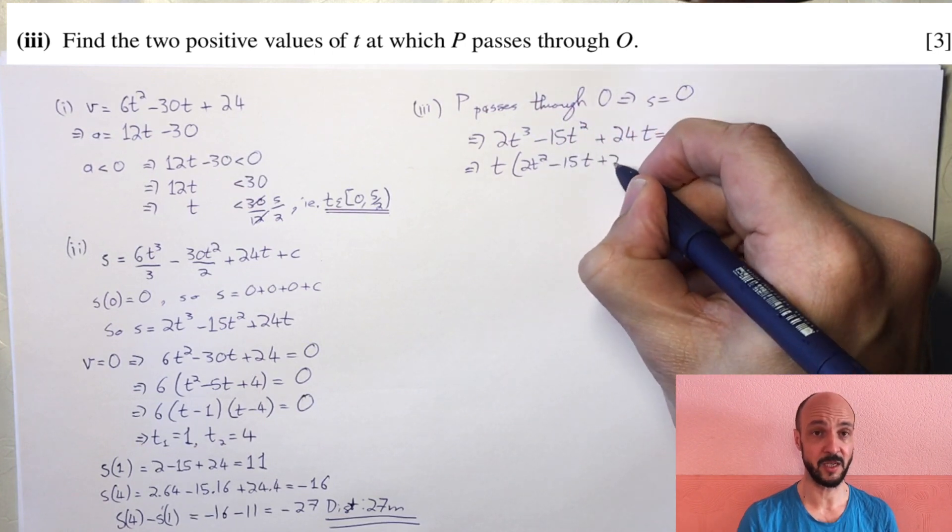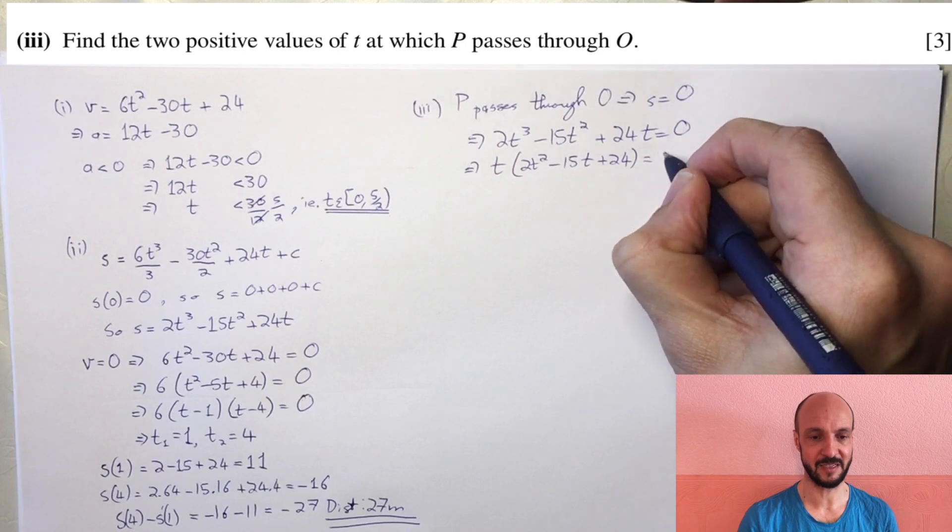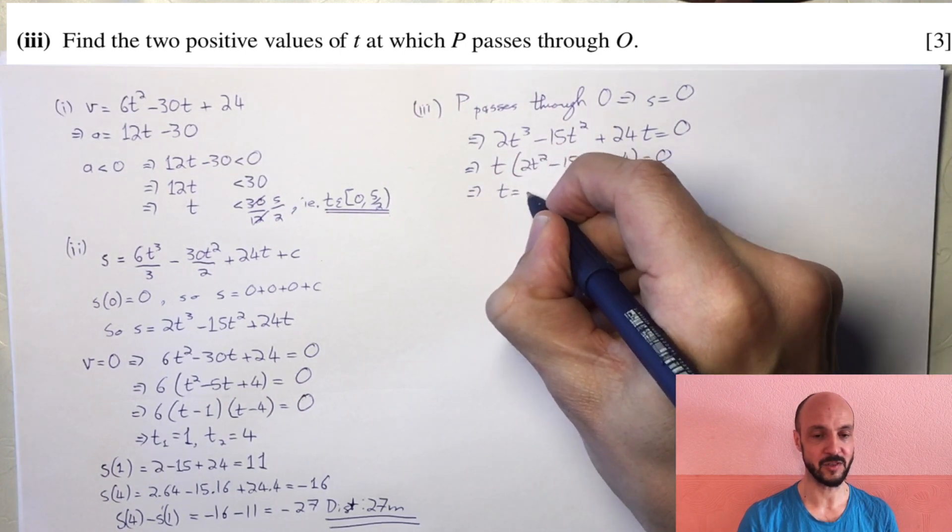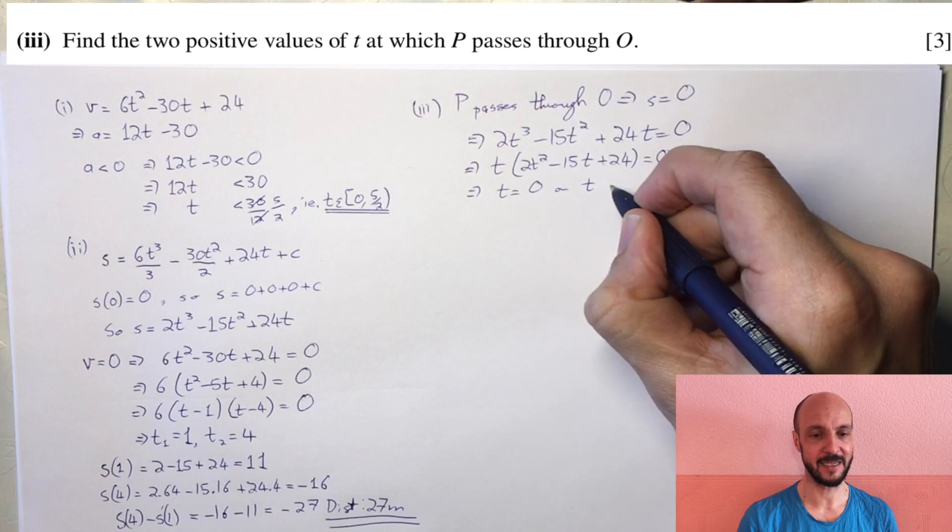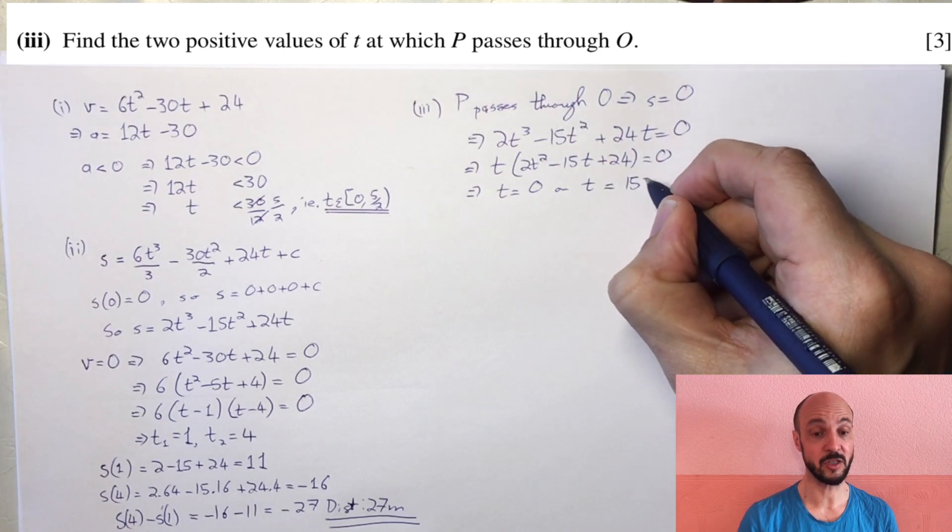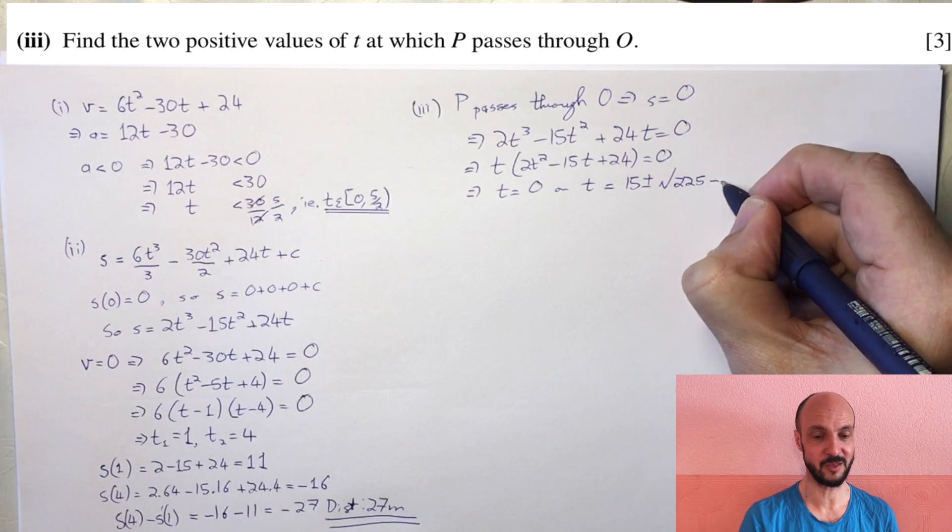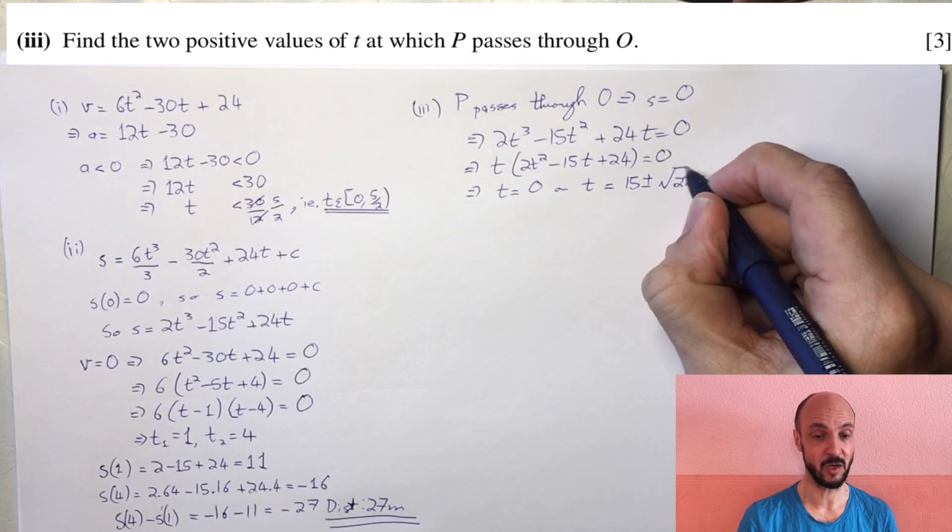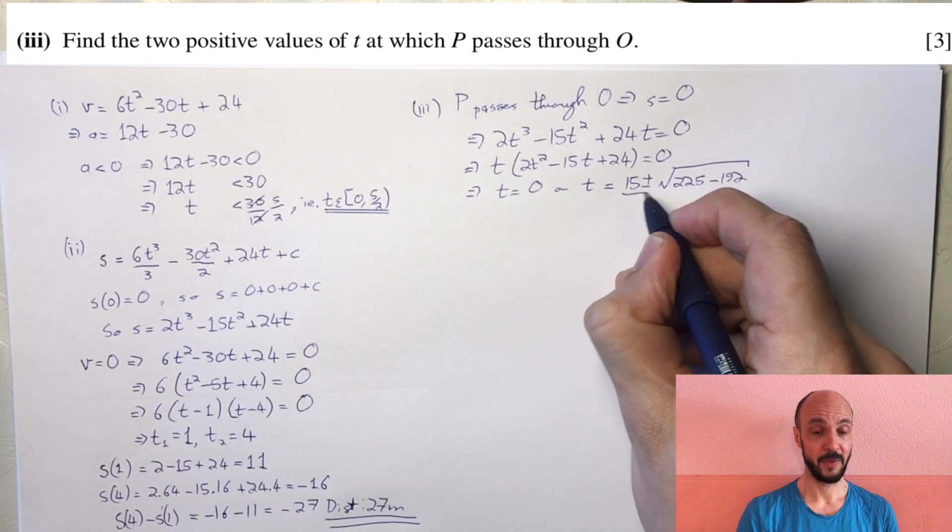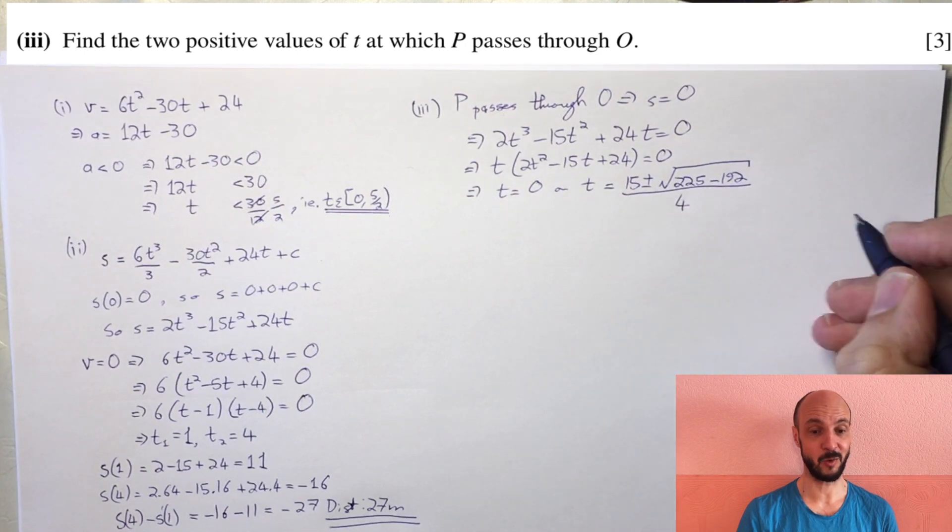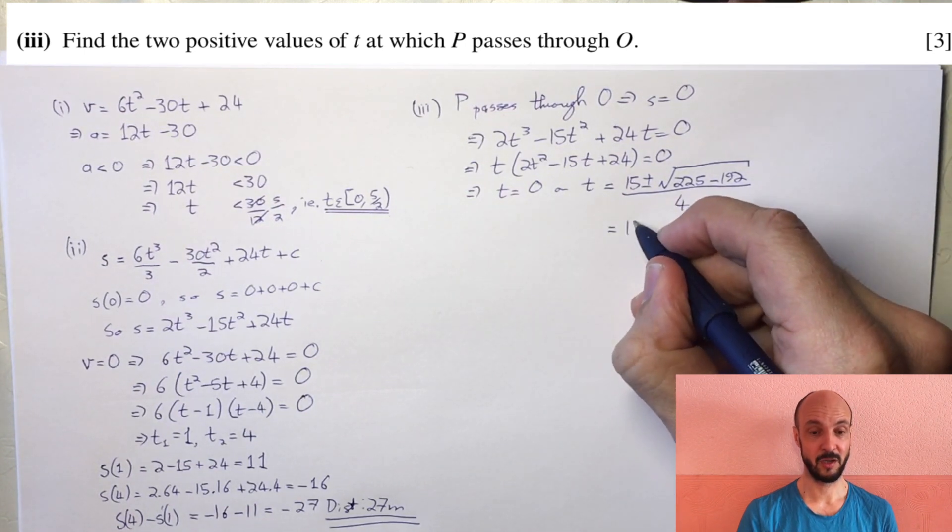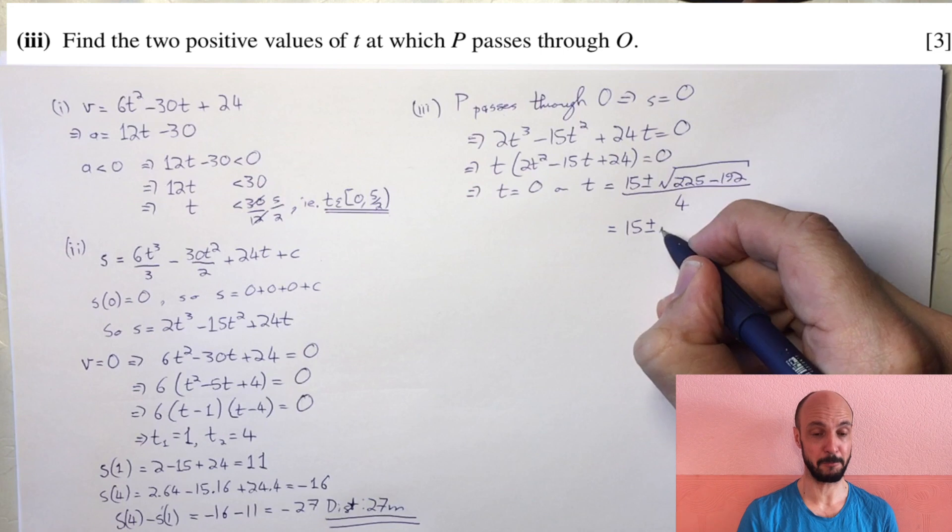Using the quadratic formula: t equals 15 plus minus the square root of 225 minus 4ac, which is 4 times 2 times 24 or 192, all over 4. That's 15 plus minus the square root of 33 over 4.